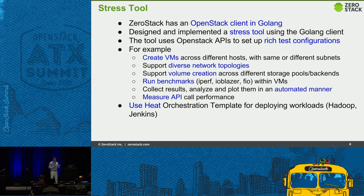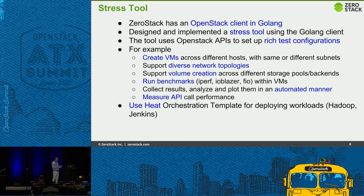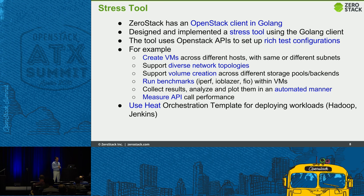With the help of the tool, we can create VMs across different hosts or on the same host, across the same subnet or different subnets. We can create volumes for VMs, attach and detach them, SSH into VMs, run storage or networking benchmarks, collect results, and run automated analysis. The tool also measures API call performance. For deploying application workloads like Hadoop or Jenkins, we use Heat orchestration templates.